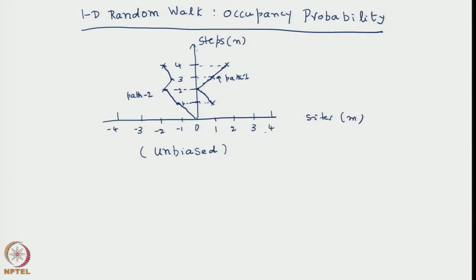Let us continue with the unbiased one-dimensional random walk. A pictorial representation of the whole process is shown here - a lattice along the x-axis. We have shown about plus 4 sites to the positive side and 4 sites to the negative side, but the lattice actually extends from minus infinity to infinity. A walker starts from the origin and could take many paths in the course of n steps.